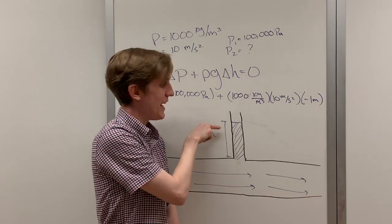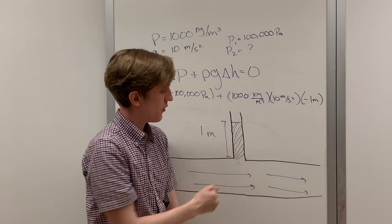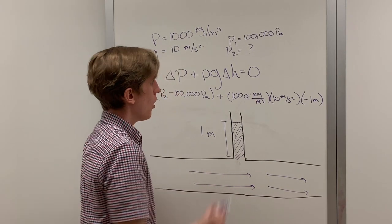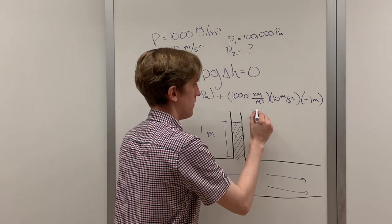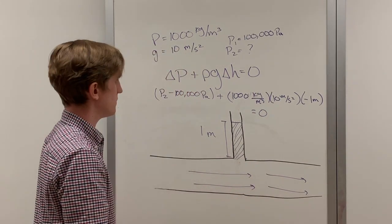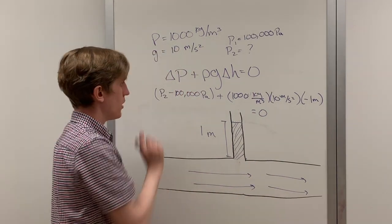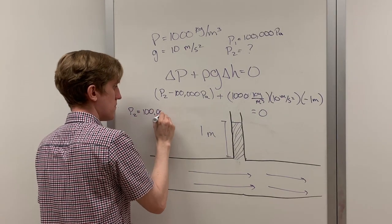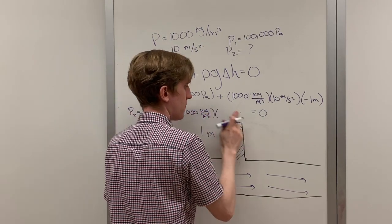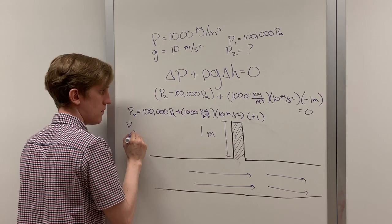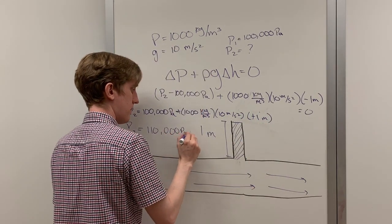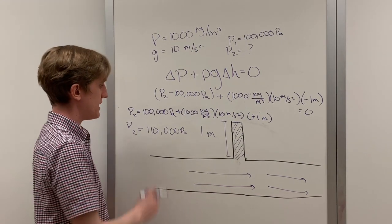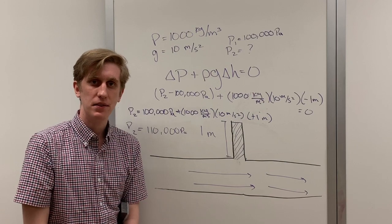It's how much your height has to change to get from our first point, the top of the stand pipe, to our second point, the bottom of the stand pipe. All this must equal zero. We can now solve this equation to determine the pressure at the bottom of the stand pipe. And there we go. The pressure at the bottom of the stand pipe is equal to 110,000 pascals.